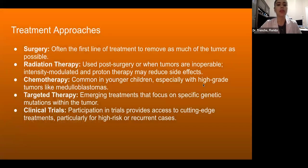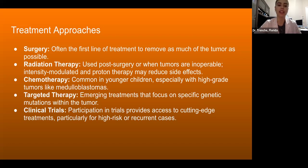Treatment approaches: Surgery is often the first line of treatment to remove as much of the tumor as possible. Radiation therapy is used post-surgery or when tumors are inoperable; intensity-modulated and proton therapy may reduce side effects. Chemotherapy is common in younger children, especially with high-grade tumors like medulloblastomas. Targeted therapy involves emerging treatments focusing on specific genetic mutations within the tumor, and clinical trials provide access to cutting-edge treatments, particularly for high-risk or recurrent cases.